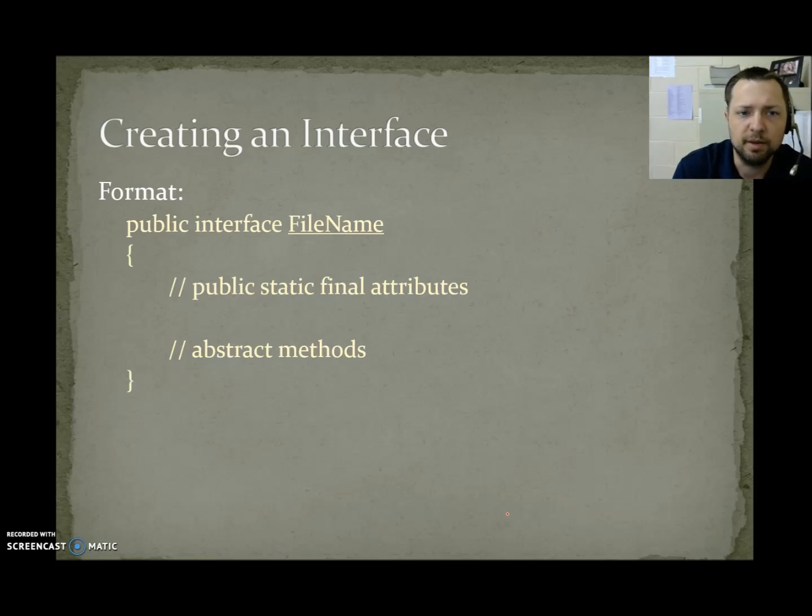Creating an interface. Public interface, we don't say class, whatever we call it as a file name. Then we have any of the public static final attributes we want, followed by a list of abstract methods that have no code in them. They're just abstract methods with semicolons behind their header.